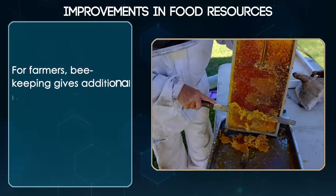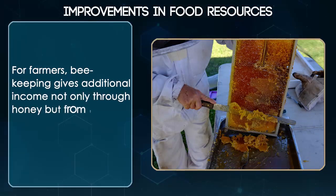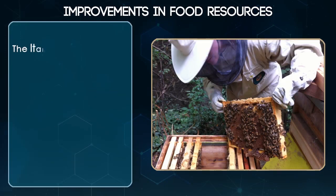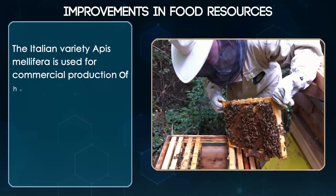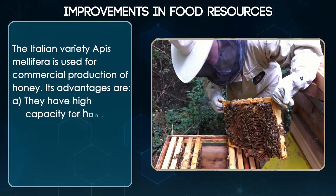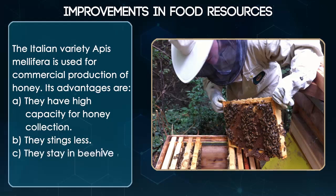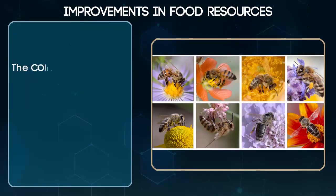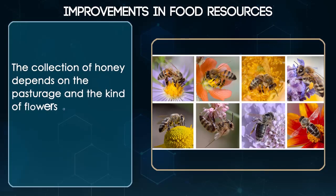For farmers, beekeeping gives additional income not only through honey but from beeswax also. The Italian variety Apis mellifera is used for commercial production of honey. Its advantages are: a. They have high capacity for honey collection, b. They sting less, c. They stay in the beehive for a long period. The collection of honey depends on the pasturage and the kind of flowers available for nectar and pollen collection.